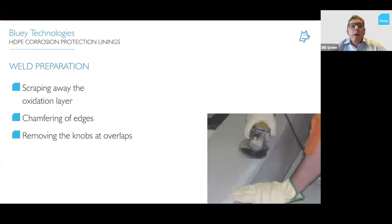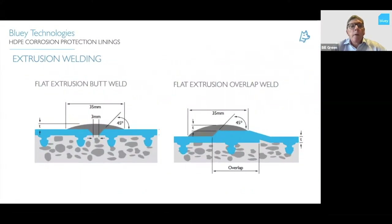It's very important to remove the oxidization layer from HDPE, as this layer forms on the sheet within about an hour of exposure. You need to remove that layer and apply the weld within half an hour. Applicators also chamfer the edges of sheets and remove knobs where sheets overlap for welding. Various weld details are shown here. The preferred detail is to overlap the sheet; on the other detail there is a maximum 3mm gap to the concrete so you don't lose too much heat into the concrete, which acts as a heat sink.